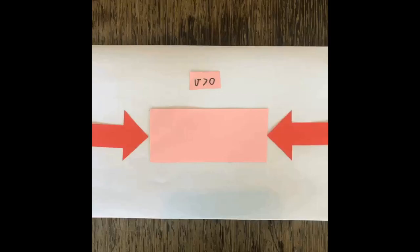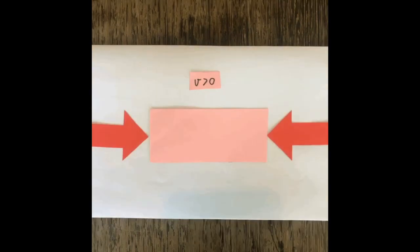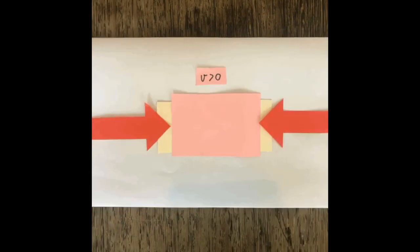Let's first look at a positive Poisson's ratio. If nu is positive, this means a material should expand in a direction perpendicular to its compression, or become thinner upon elongation.